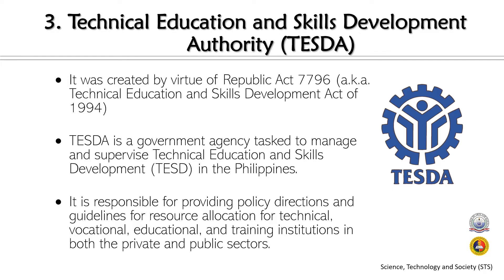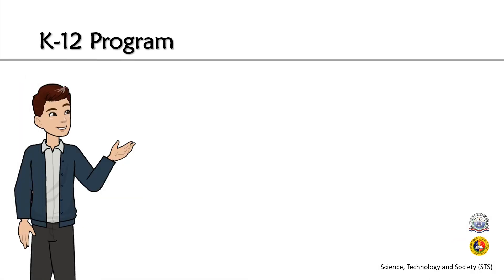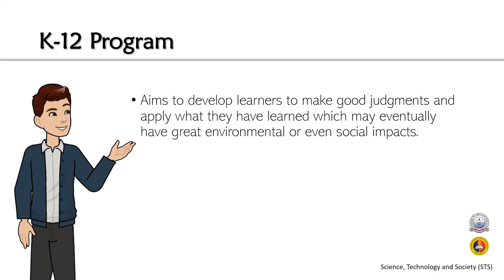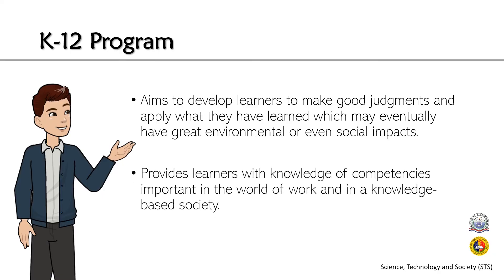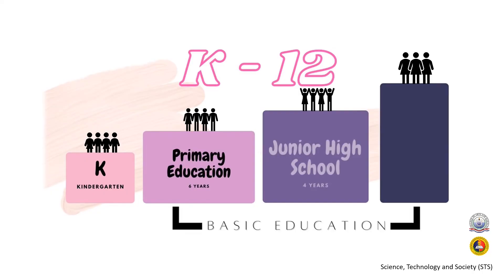We will now move on to the K-12 education system. The K-12 program aims to develop learners to make good judgments and apply what they have learned, which may have great environmental or social impacts. It provides learners with knowledge and competencies important in the world of work and in a knowledge-based society, nurturing students to prepare for higher education. The program consists of Kindergarten followed by 12 years of basic education: 6 years of primary education, 4 years of junior high school, and 2 years of senior high school.